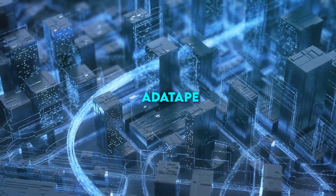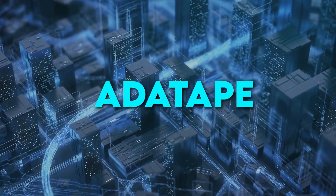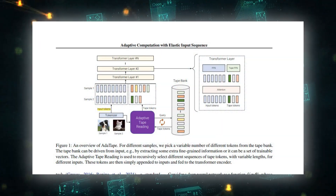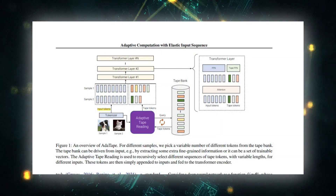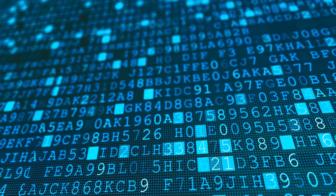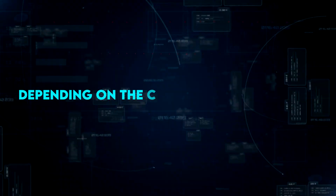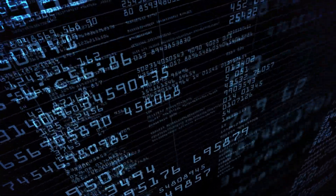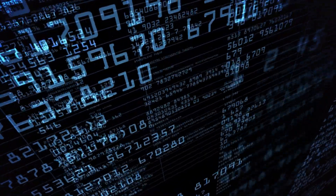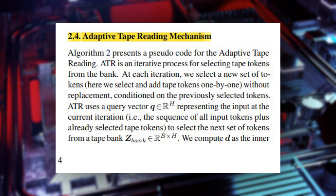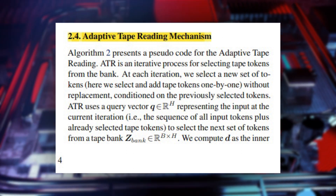Adatape utilizes a flexible range of tokens to generate adaptable input sequences, meaning the number of tokens used can vary depending on the complexity of the input. For uncomplicated inputs, only a few tokens are acquired, while more tokens are needed for more intricate inputs. This AI uses an adaptive tape reading mechanism to determine a varying number of tape tokens that are added to each input based on the input's complexity. This mechanism uses a neural network to predict the number of tape tokens needed for each input.